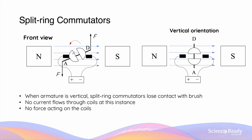During the rotation, the commutators will remain in contact with the brushes, except when the armature reaches this vertical orientation. When the contact between the brushes and the commutators is lost, the circuit is no longer complete, and as a result, there will be no current flowing through the coils of the armature.